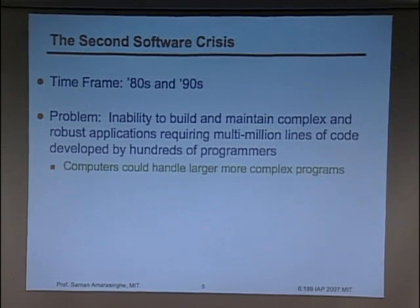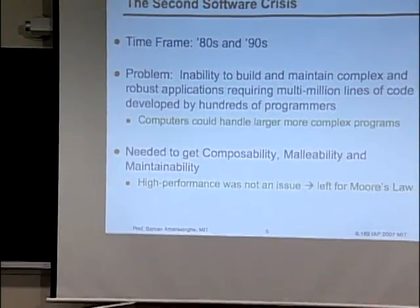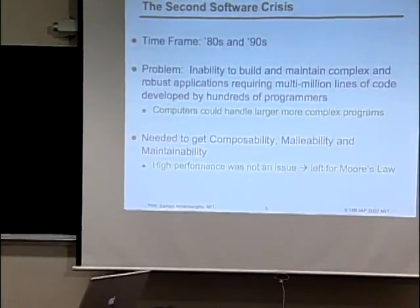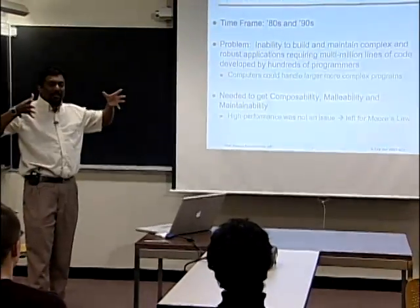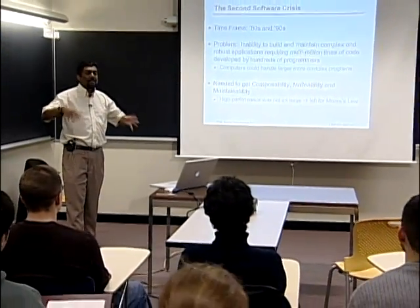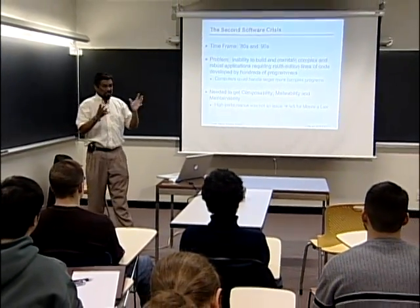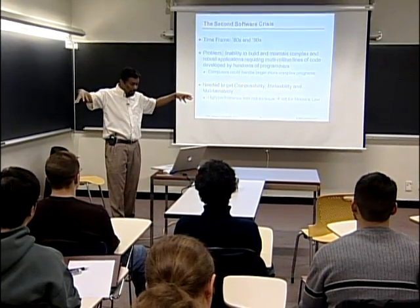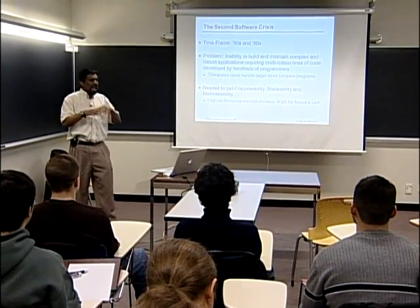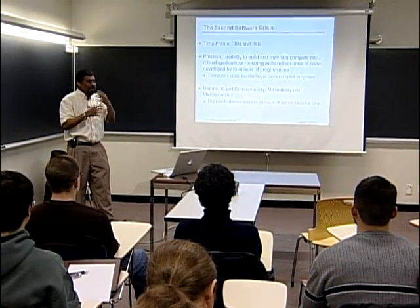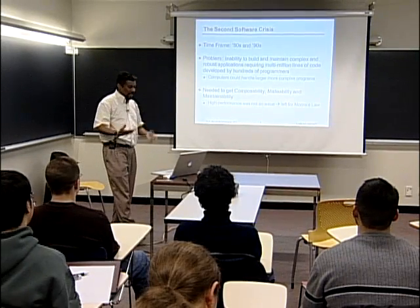The way you write a small piece of code really didn't scale. This was a huge crisis — people said we will never be able to write large programs because these programs will never work; they're going to be brittle. The problem was we wanted to build software that's composable, malleable, and maintainable — multiple people should be able to work on it, compose it, and when requirements change it should be easy to change and maintain.